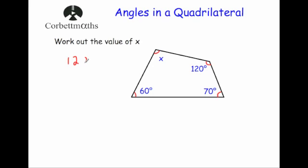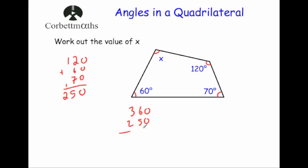We're going to add together 120 plus 60 plus 70. 2 plus 6 is 8, plus 7 is 15 — put the 5 down, carry the 1 — and that gives us 250. So these three angles add together to give you 250 degrees. The value for x must be what you add to get 360 degrees, so we take 250 away from 360 and get 110 degrees. So this missing angle is 110 degrees.